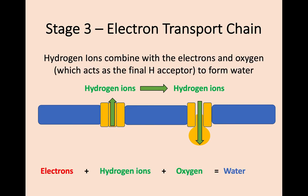Finally, the hydrogen ions and electrons combine with oxygen, which was required for these aerobic processes to take place. Oxygen is described as the final hydrogen acceptor, as it combines with the hydrogen to form water. This means we end the entire process of respiration with 38 molecules of ATP in total — 36 from the electron transport chain and 2 from glycolysis — along with carbon dioxide produced in the citric acid cycle, and water produced in the electron transport chain.